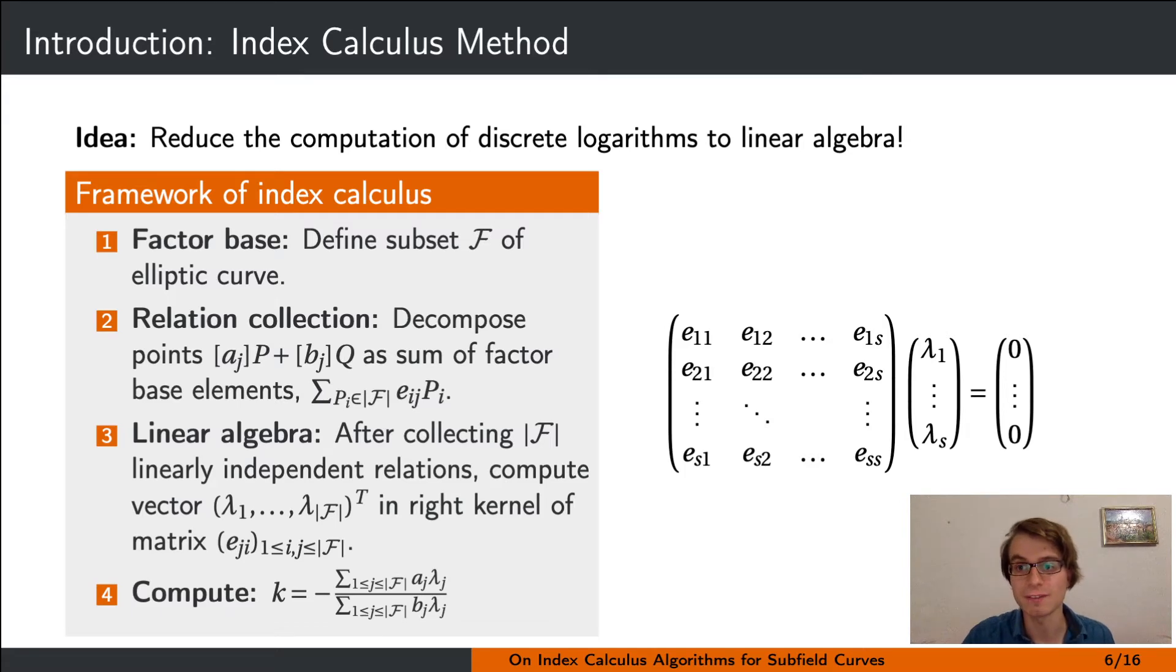In index calculus there are various trade-offs one needs to consider. On one hand, we want to be able to write many group elements as a sum of factor base elements to keep step 2 from failing too often. On the other hand, we want the factor base to not be too large, as we need to find as many relations as there are factor base elements. Moreover, the factor base has to be chosen in a way that allows for efficient decomposition in the relation collection.